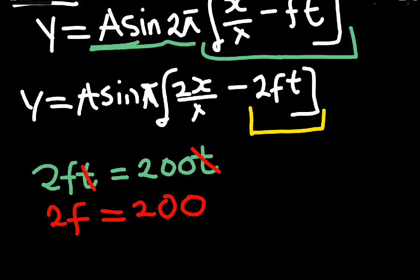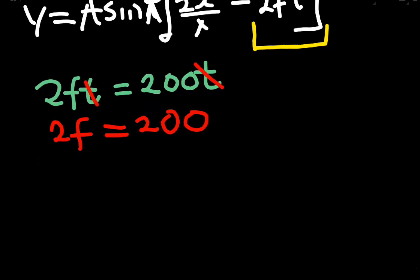Next I just need to isolate f, or solve for f. That's by dividing all through by 2. 2 cancels 2 here. Here is f, which is our frequency. 2 into 200 is 100.